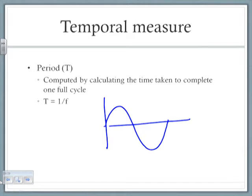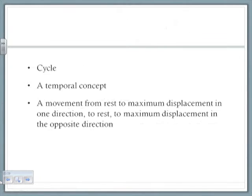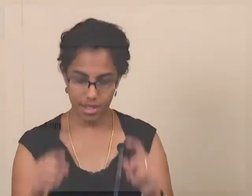A period is the time taken to complete one full cycle. But before I do that, I'm going to go a couple of slides forward and talk about cycle first. Cycle is a temporal concept. A cycle is nothing but a movement of a particle from rest to a point of maximum displacement in one direction, to come back to rest, to point of maximum displacement in the other direction, and then come back to rest. That is one cycle.